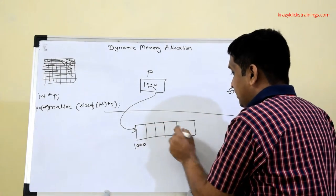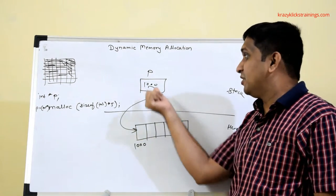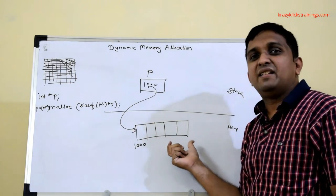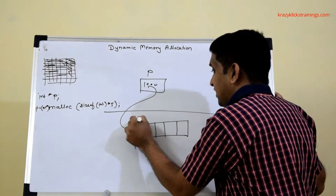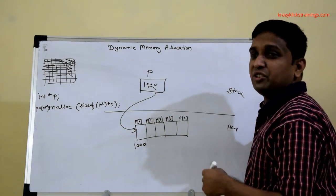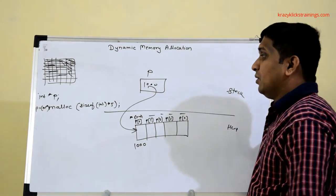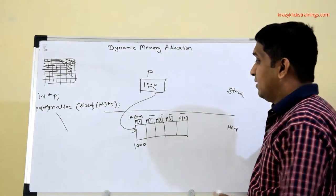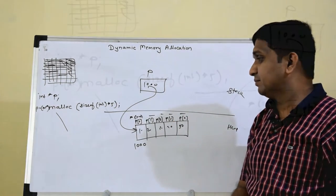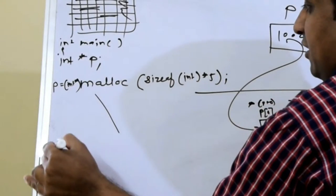Now I can store 5 integers in this block. This block can be treated as an array with base address p. Once I write this statement - first declare an integer pointer, then allocate memory dynamically using malloc - I can treat this block as an array with 5 integers. The memory locations can be accessed as p[0], p[1], p[2], p[3], and p[4], or using pointer notation: *(p+0), *(p+1), and so on. I can store elements like 10, 20, 30, 40, 50 and perform operations on them inside the main function.